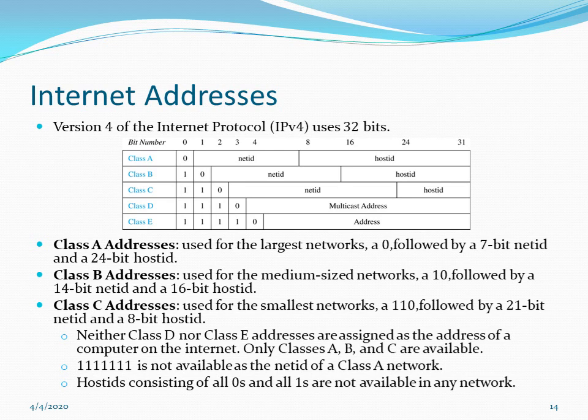There are additional restrictions: for a net ID in class A, you cannot use a net ID that is all ones. Also, host IDs consisting of all zeros or all ones are not available in any network. We will count each class and then add them up to get the total number of internet addresses under IPv4. We apply both the sum rule and the product rule.